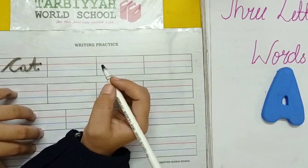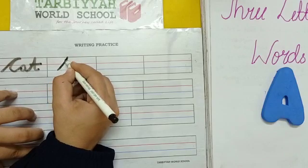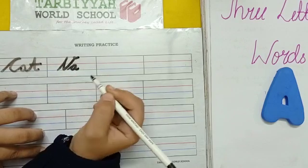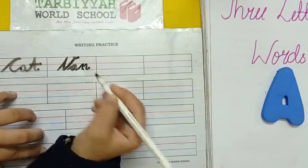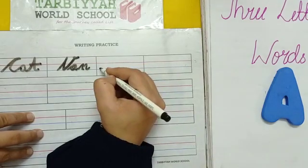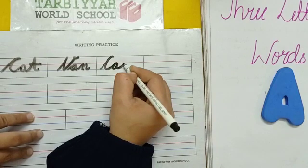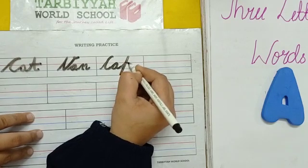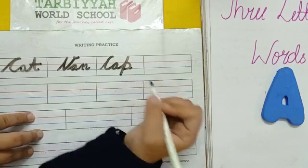Van. V-A-N — van. We have to make a slanting line for V, then V-A-N — van. Now cap, C-A-P. For P, a slanting line from bottom to top then top to bottom and a semi-circle. Cap, C-A-P.